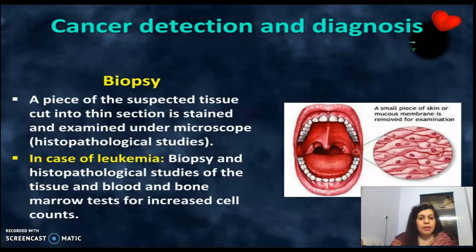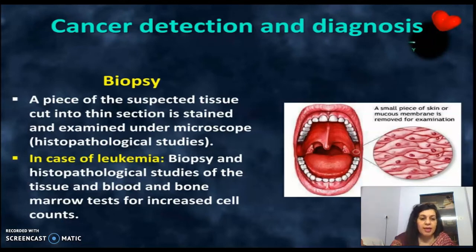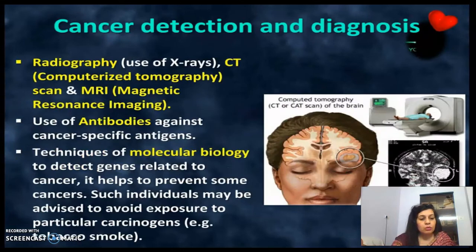To detect or diagnose cancer, one method is biopsy — a piece of suspected tissue is cut into thin sections, stained, and examined under a microscope. This is called histopathological study, which tells us whether the disease is cancerous or not. In the case of leukemia, biopsy, histopathological studies, and blood and bone marrow tests for increased cell counts are used. Radiography uses X-rays, CT (computerized tomography) scans, and MRI (magnetic resonance imaging) to identify cancer in particular parts of the body.